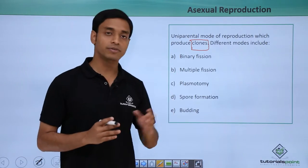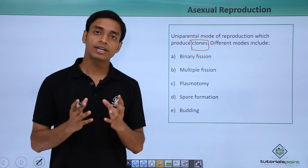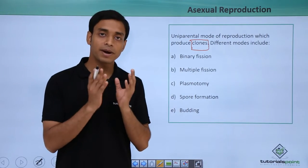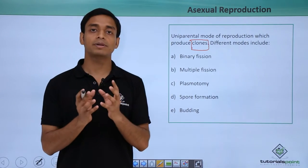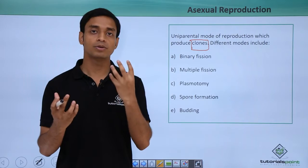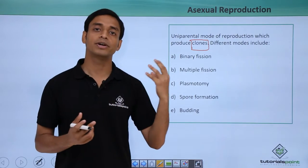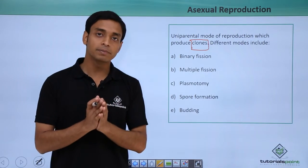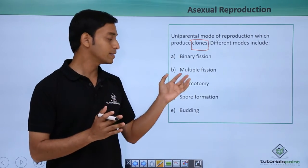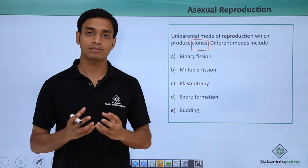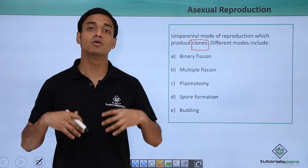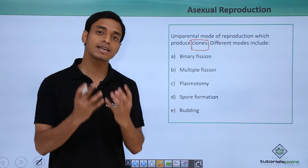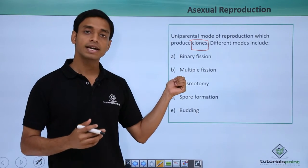The next type is multiple fission. It is similar to binary fission, but in binary fission only two daughter cells are produced from a parent, whereas in multiple fission more than two daughter cells are produced. This is known as multiple fission.